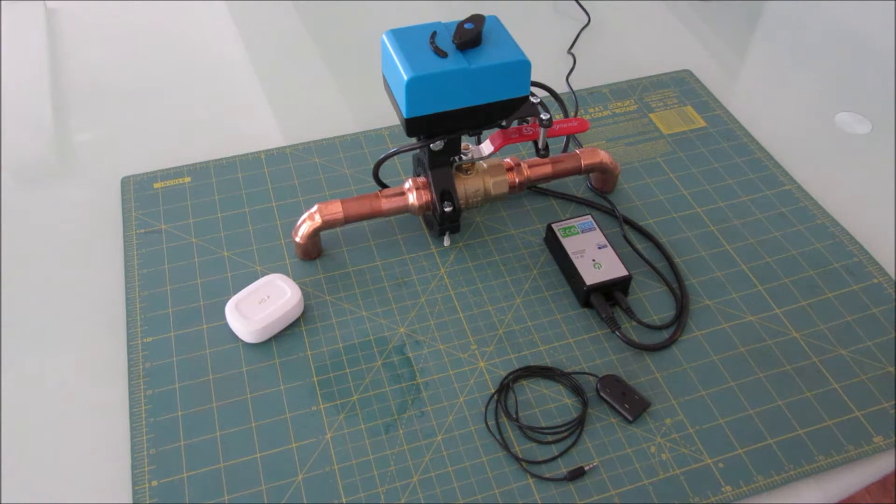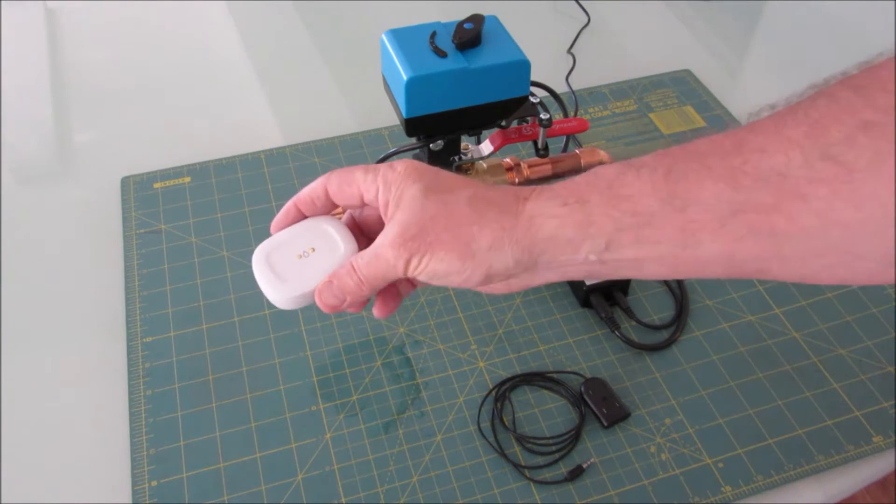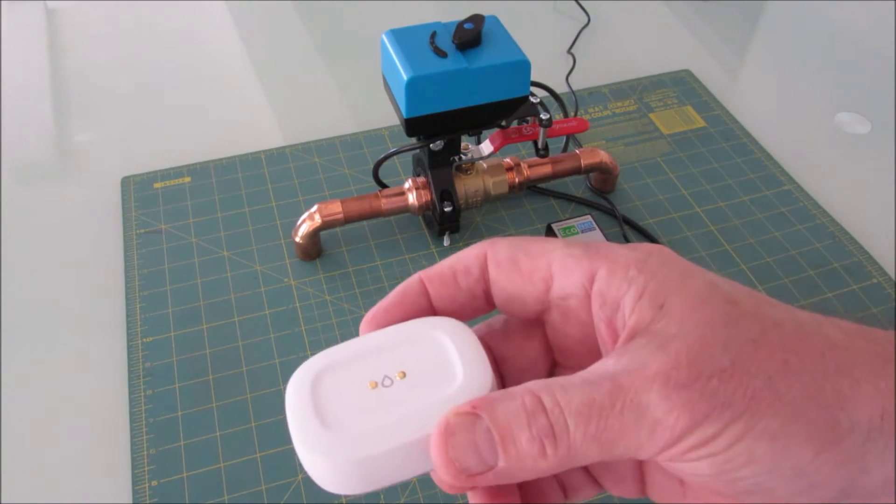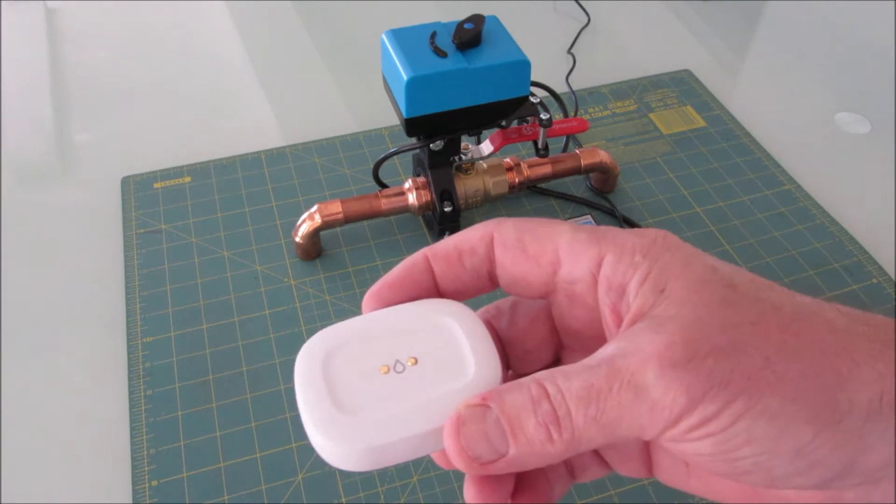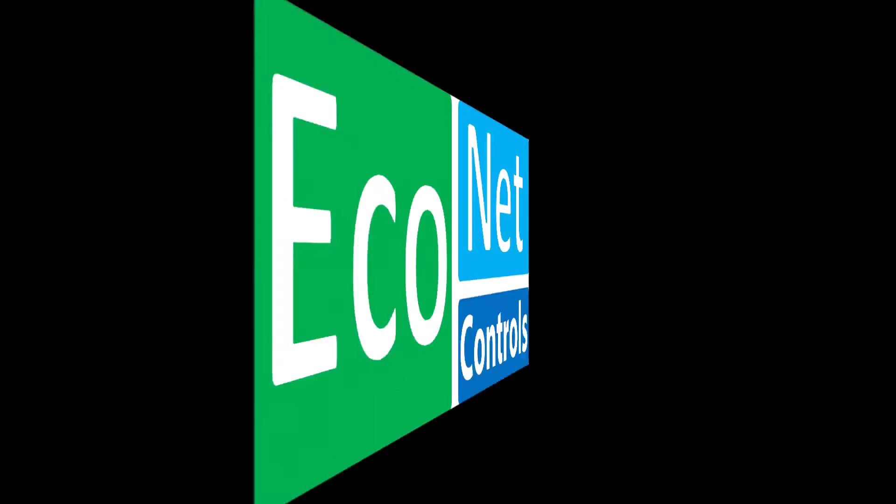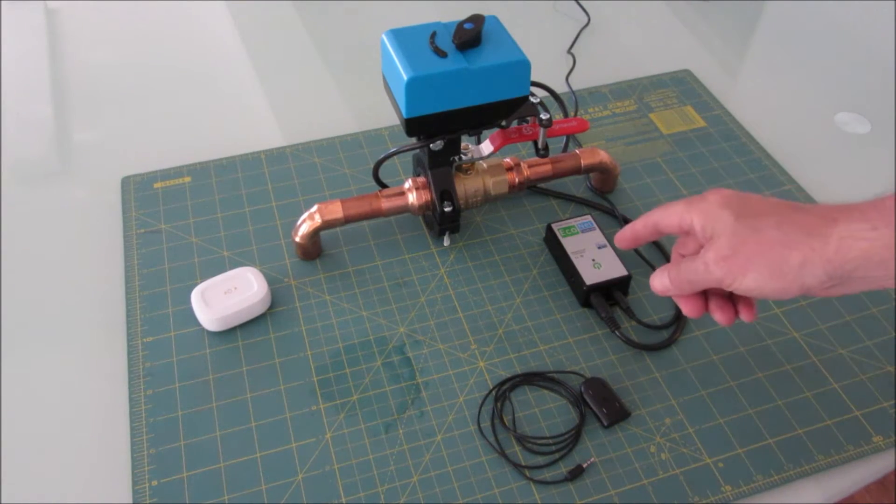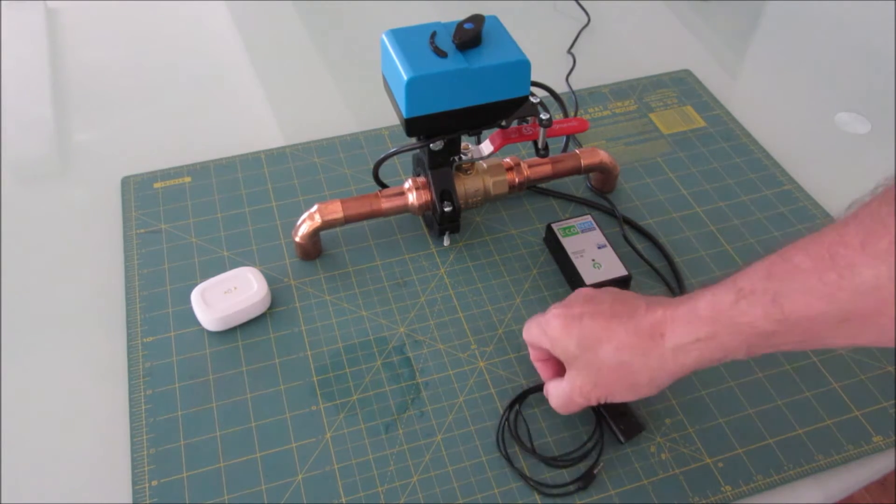Today I'm going to show you the wireless leak sensor option. Typically in a smart home you'll place these types of leak sensors around the house in various leak-sensitive locations, and that works fine. But the Bulldog offers the option to add a wireless leak sensor.